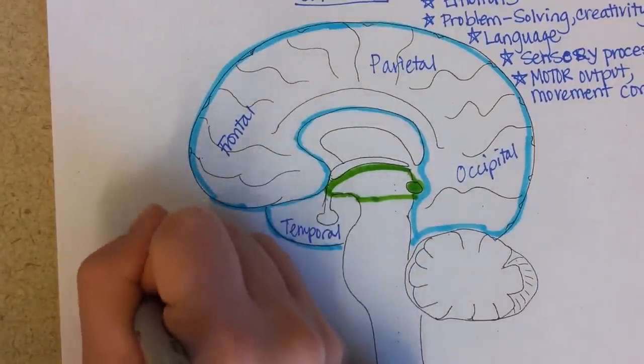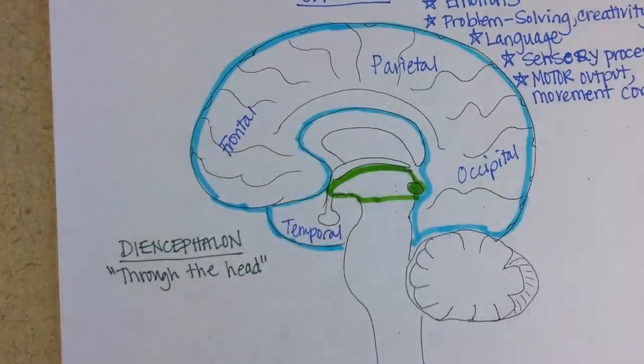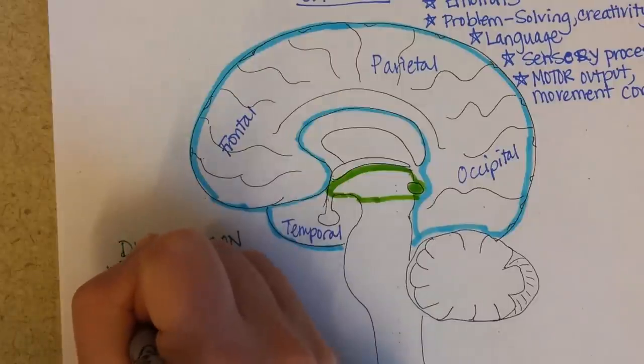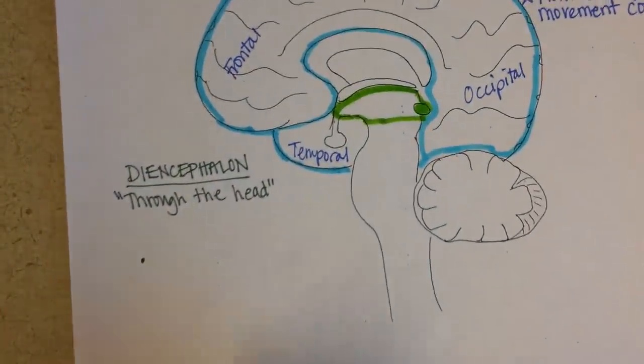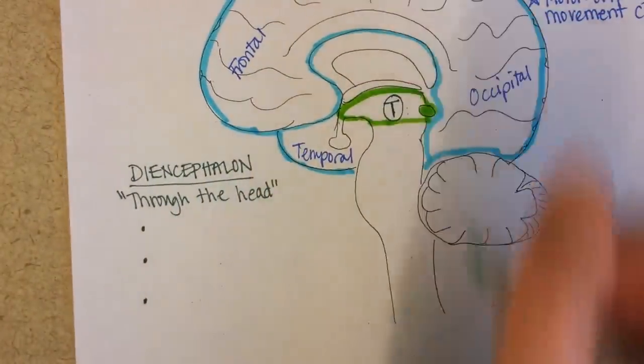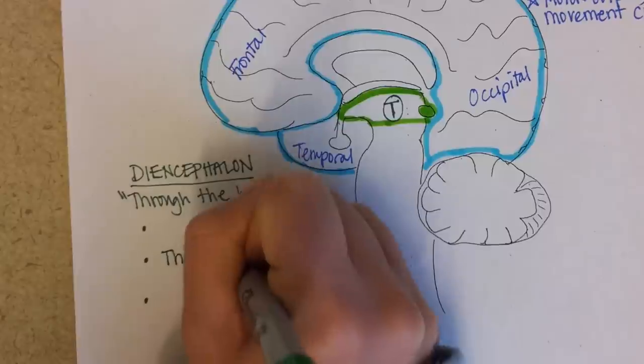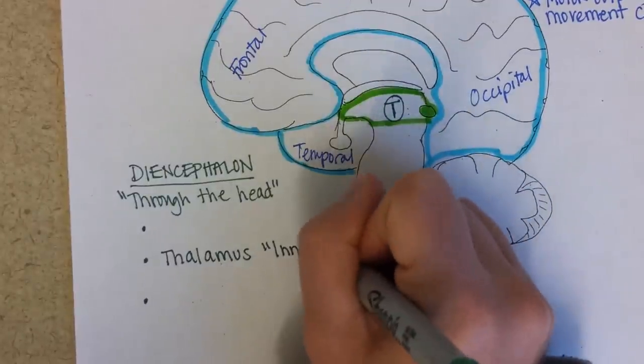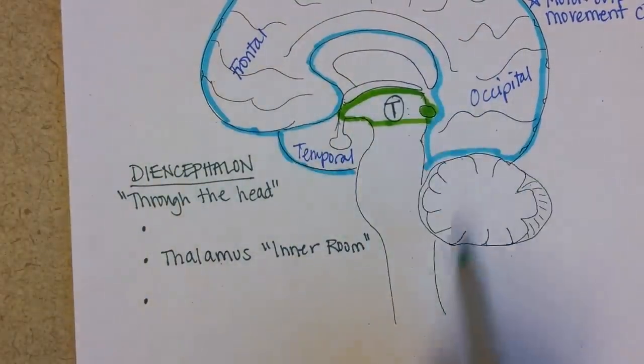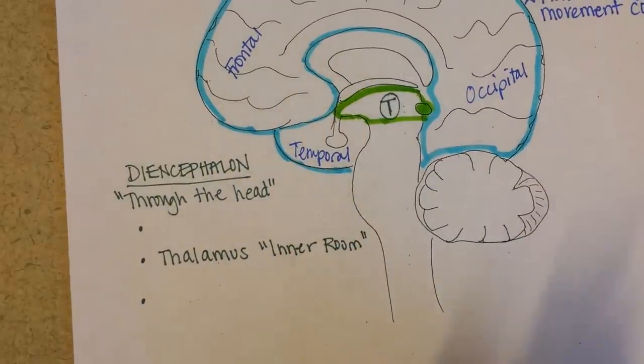That word diencephalon means through the head. See how this is a sagittal section and we're looking right into the middle of that, it's core. The central part in which the naming is centered off of is the thalamus. Thalamus means inner room. It's like the innermost room of your brain. Pretty much everything that occurs up here that needs to go down has to go through the thalamus.